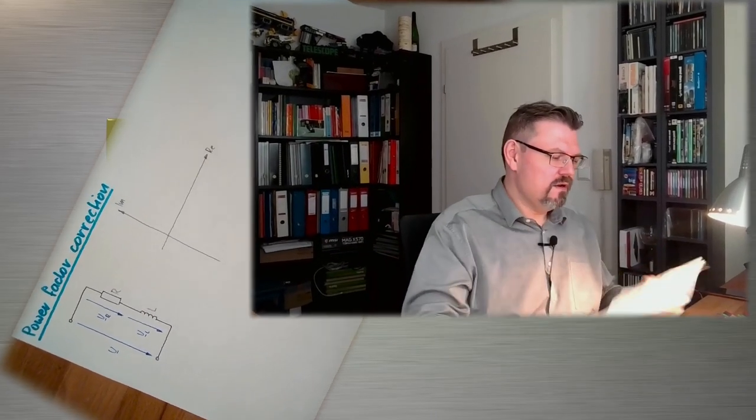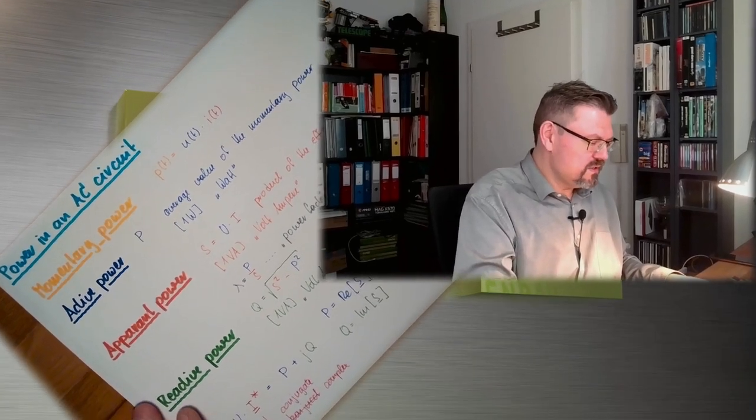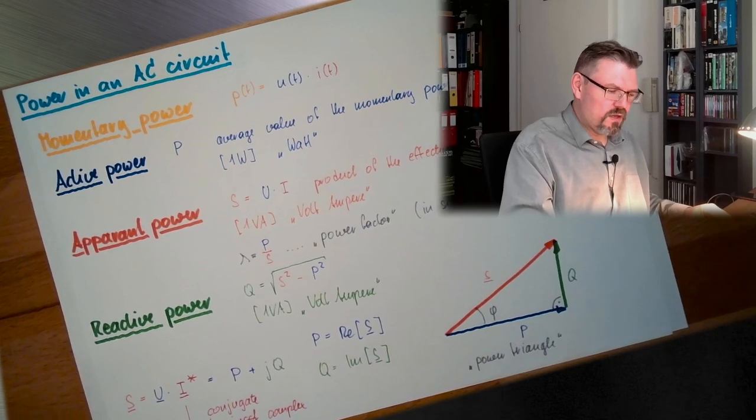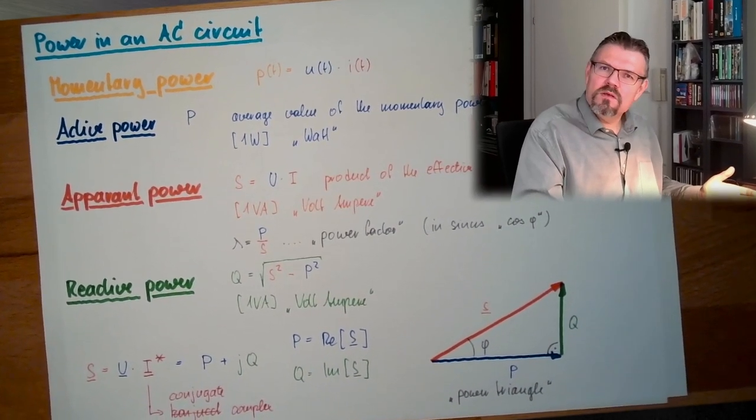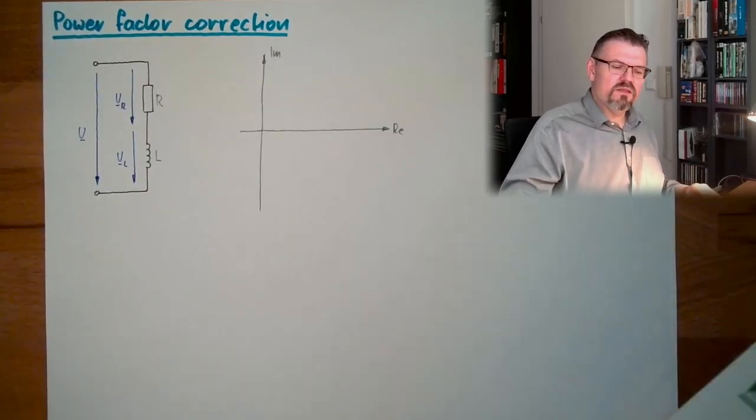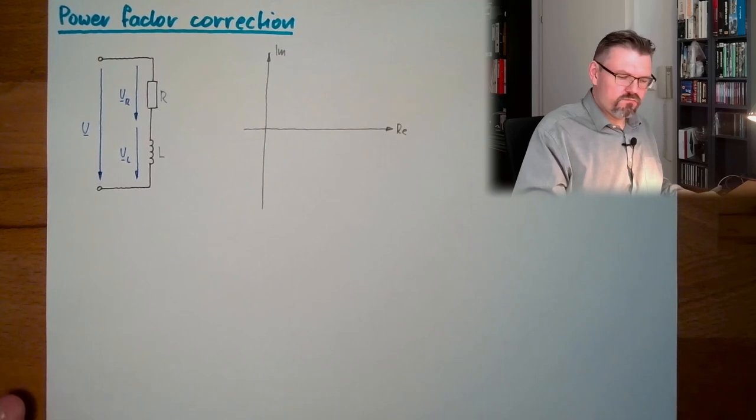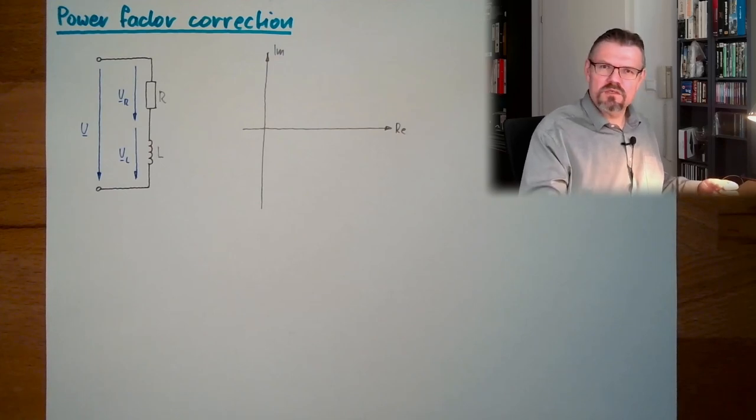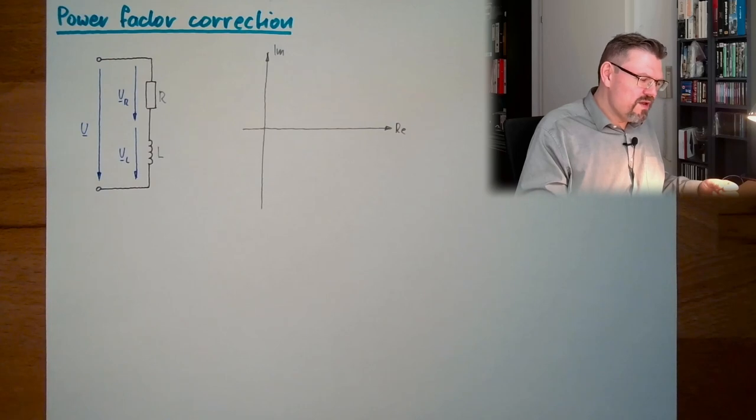Here I have my sheet with momentary power, active power, apparent power, reactive power. And this reactive power cannot be used, but I have to transmit it over my network. As a network operator, why should I provide resources to deliver something which cannot even be used? So today we try to correct our power factor a little bit.